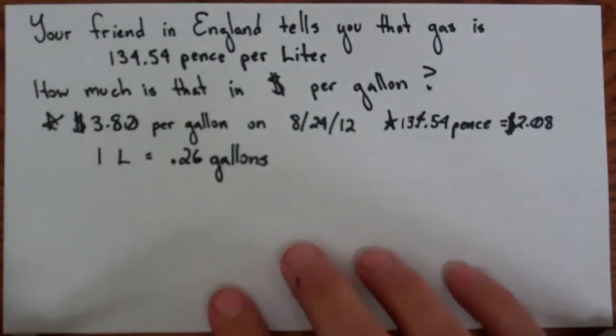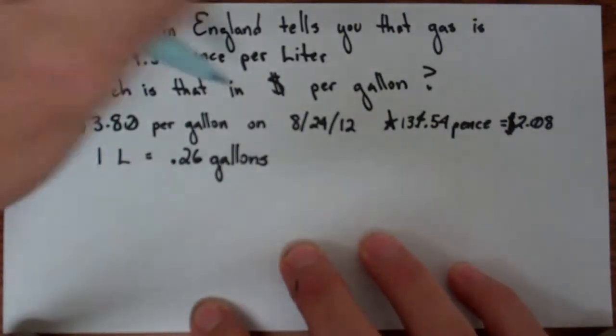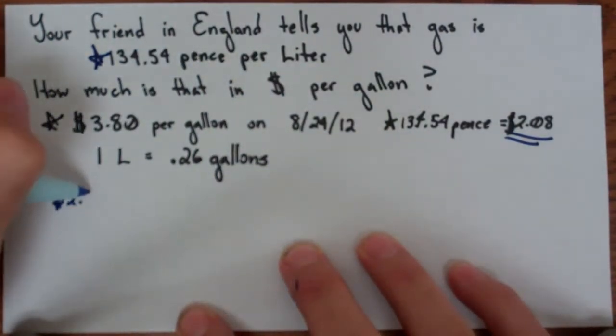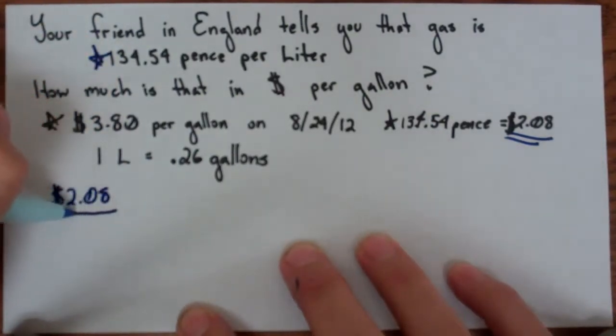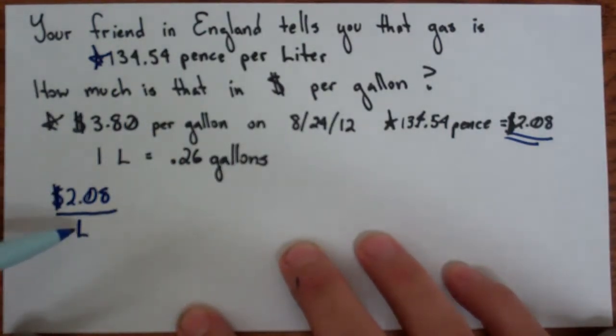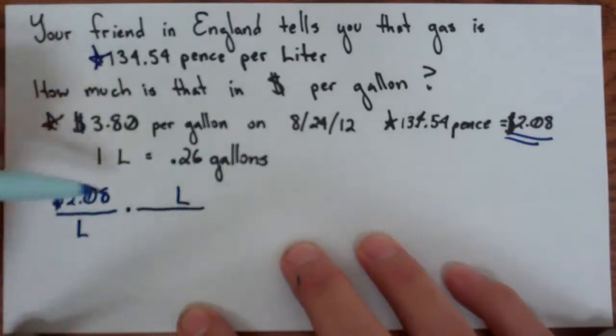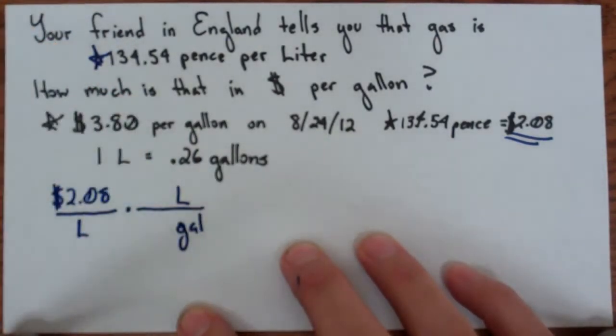So what we're going to do is we're first going to change the pence to the dollars. So I'm going to have $2.08 per liter. So this is the gas per liter. Now the liter is on the bottom. So what I want to do is I want to have liters on the top to be able to reduce this and gallons on the bottom.